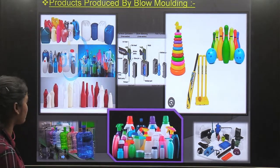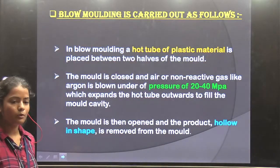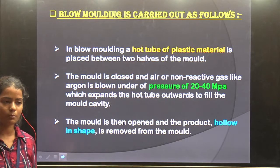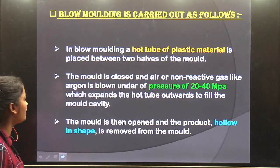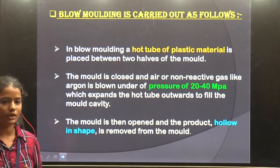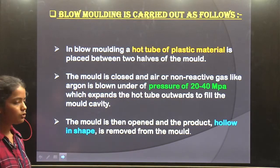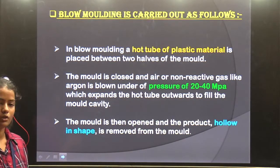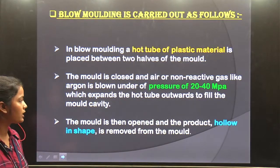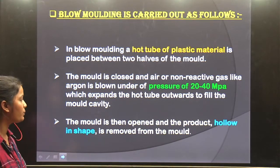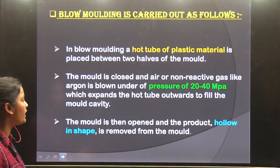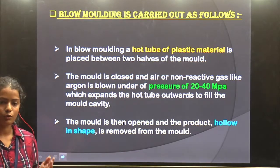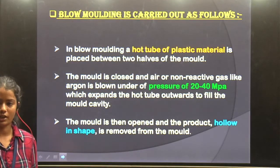Now let's look at the process. First of all, we have a hot tube — the material we have to make is called a parison, which is a pipe or tube shape. There is a mold which is divided into two halves. We insert the parison in the bottom. Then we pass a high-pressurized gas — 30 to 40 megapascals — through a pipe into the tube, which expands it to fill the mold.